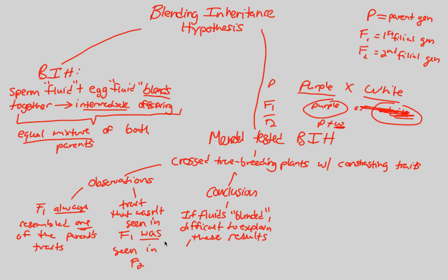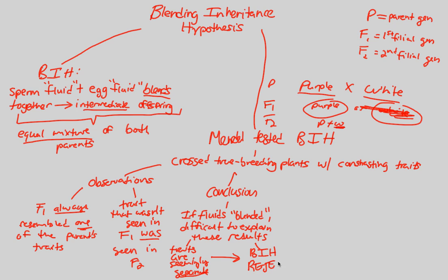What we can further state is that the traits themselves — the variations of the character, in this case flower color — are seemingly separate. It seems as if they don't blend; they stay separate from each other. And because of this lack of blending, Mendel was able to reject the Blending Inheritance Hypothesis. You should be able to explain why it was rejected: he did not get an intermediate offspring — he got only one of the parents' traits.